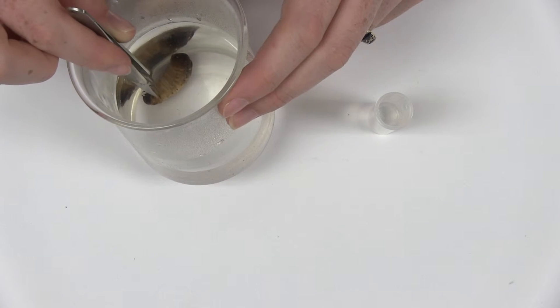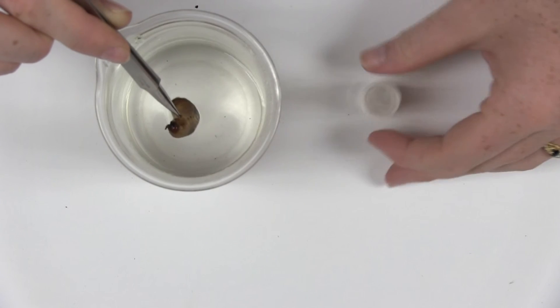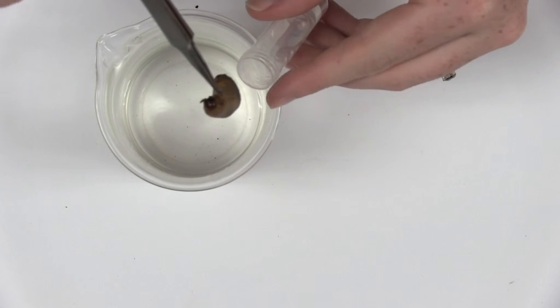When the grub is dead, transfer it from the water to the storage fluid. Gently use your forceps to place the grub in the tube without damaging it.